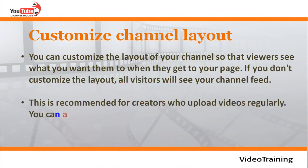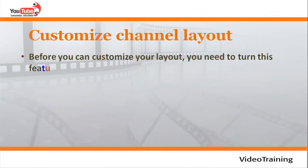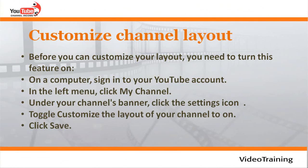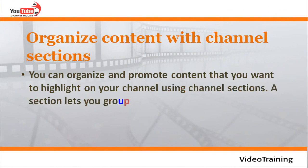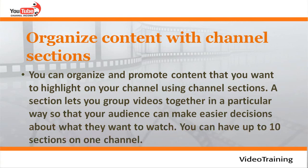You can customize the layout of your channel so viewers see what you want when they arrive. If you don't customize, all visitors will see your channel feed — recommended for creators who upload regularly. You can add a channel trailer, suggest content for subscribers, and organize videos into sections. To enable this, sign into YouTube on a computer, click My Channel, then the Settings icon under the banner, toggle 'Customize the layout of your channel' to on, and click Save. You can have up to 10 sections on one channel.